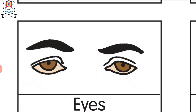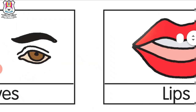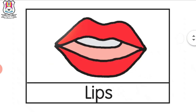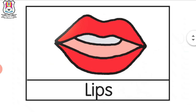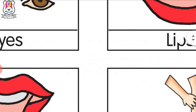What do we say? Eyes. We have two eyes. How many eyes do we have? Two. What is this? What is this? Lips. Girls use lipstick here. What do we say? Lips.